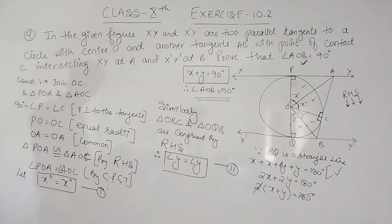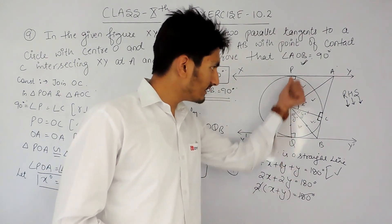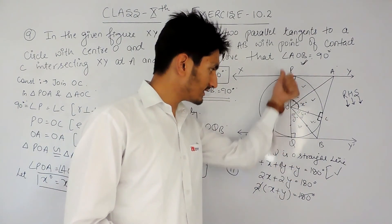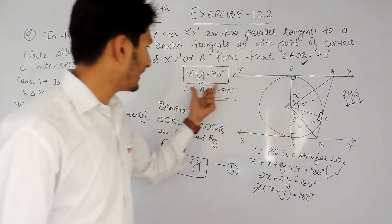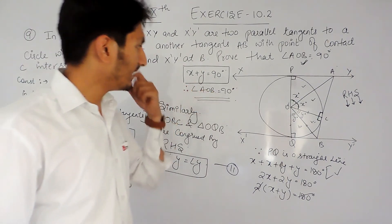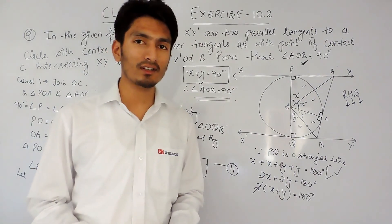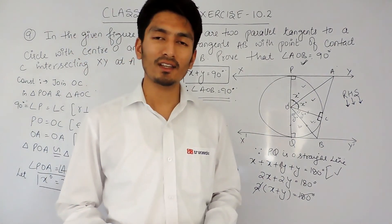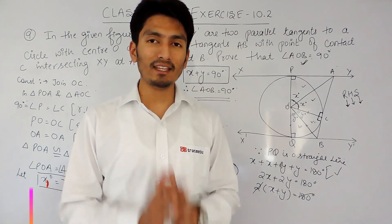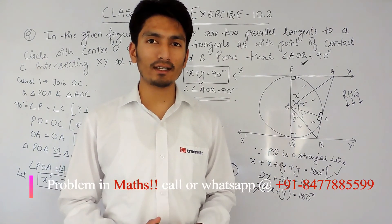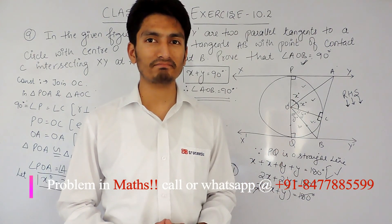With these two equations, and knowing that PQ is a straight line, the sum of all angles along it must equal 180 degrees. This gives us x plus y equals 90 degrees, which means angle AOB equals 90 degrees. This is how you solve this question. I hope you understood. If you like this video, please subscribe to our channel, and if you have any problem in maths, you can contact us directly. Thank you.